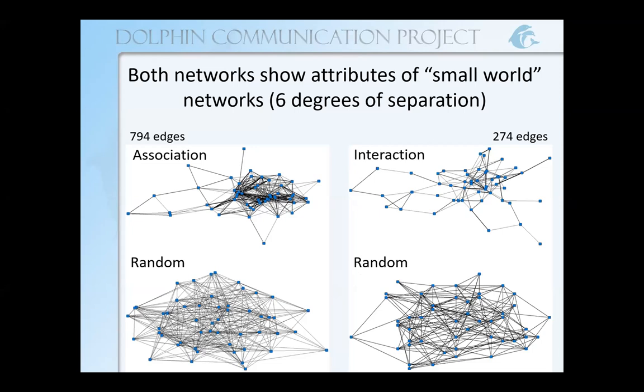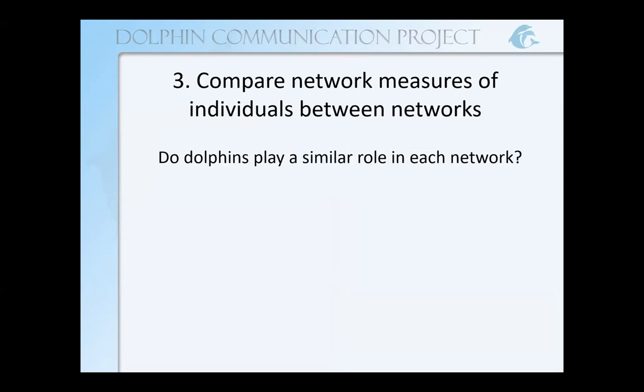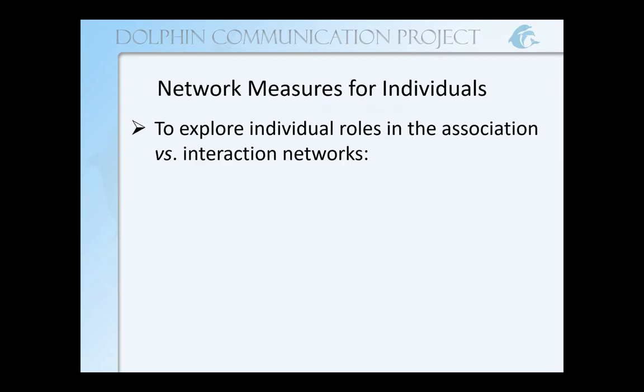We can see that the random network is more homogenous — the number of links follows a different distribution. Another thing we can do with SNA is to compare network measures of individuals between each network. So we can ask: do dolphins play a similar role in each network? I used a few different network measures to explore individual roles in the association versus the interaction network.